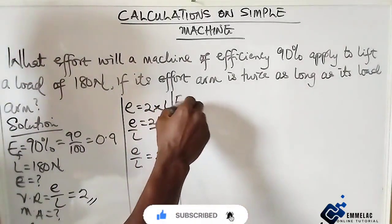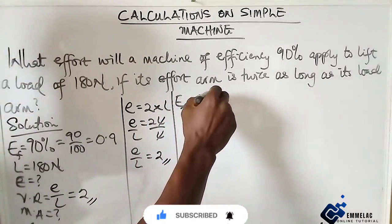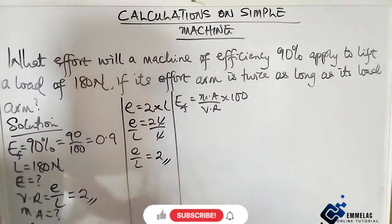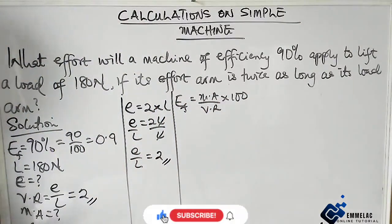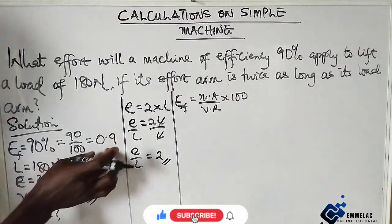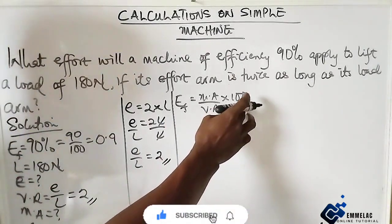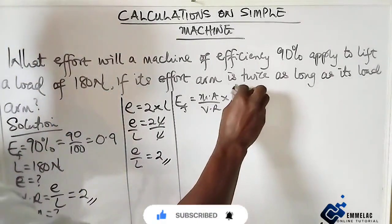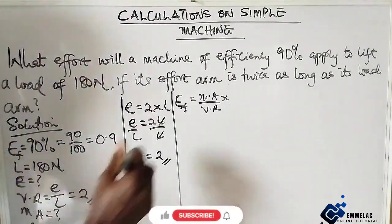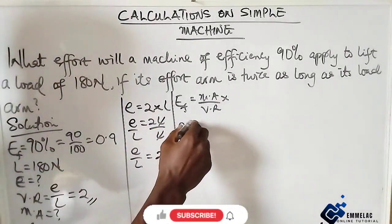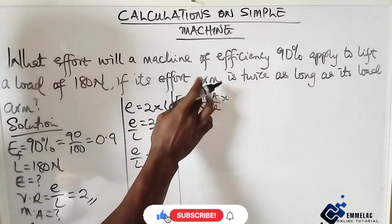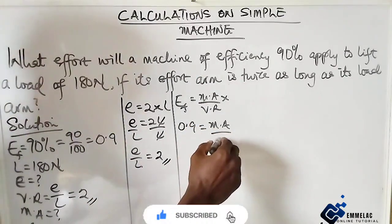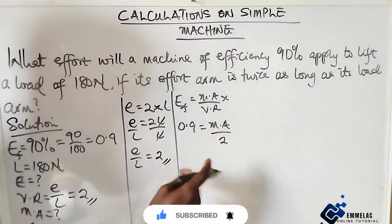So efficiency equals mechanical advantage over velocity ratio times 100. Now, since we've worked with the percentage here, we have 0.9 equals mechanical advantage over velocity ratio, which is 2. Now multiply both sides by 2.